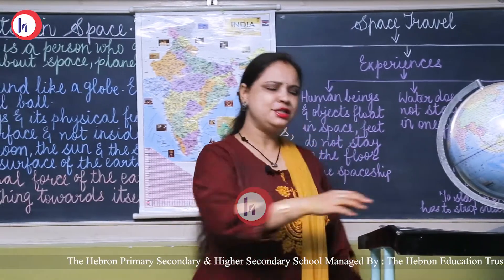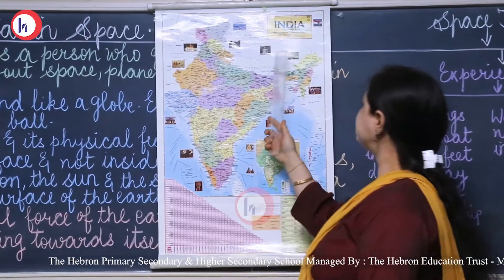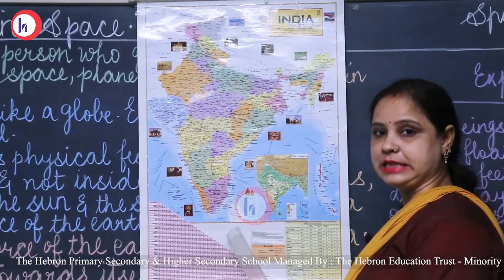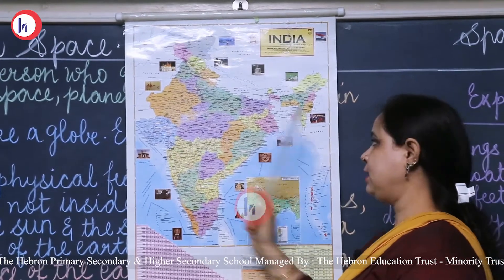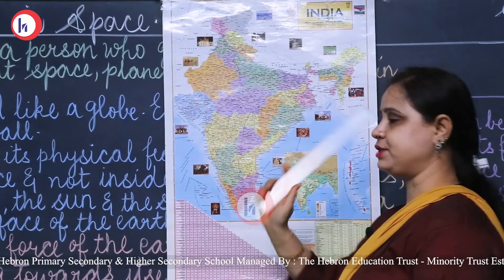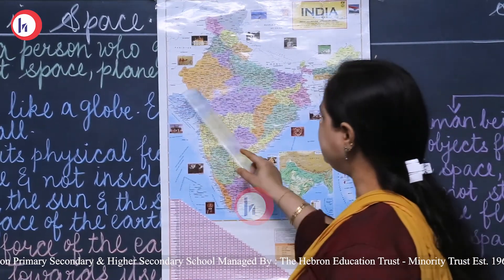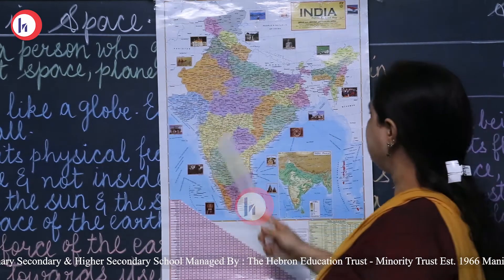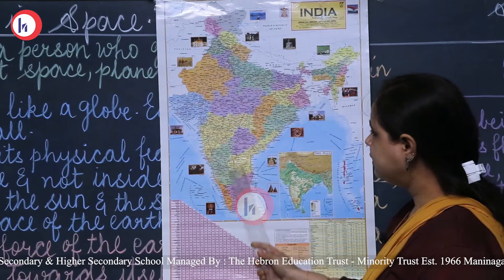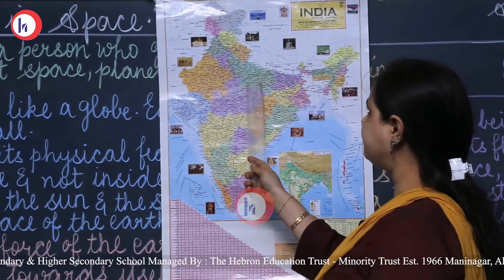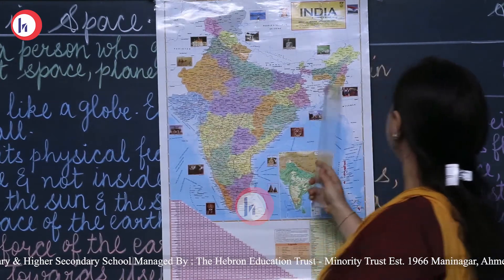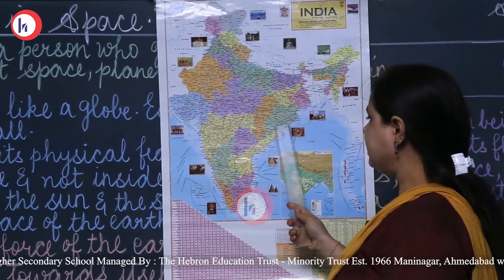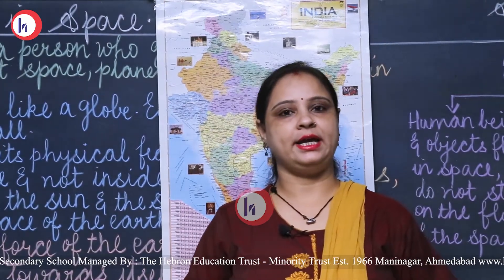This is a map. I will show you some of the states on the map. Upward is north direction, downward is south direction, to my right is east direction and to my left is west direction. Some states I will show you: here is Rajasthan, then Gujarat, then Tamil Nadu, Telangana, Karnataka, Madhya Pradesh, Uttar Pradesh, Himachal Pradesh, then here is Nagaland, Mizoram, Sikkim, and Odisha. These are some of the states out of 28 states.